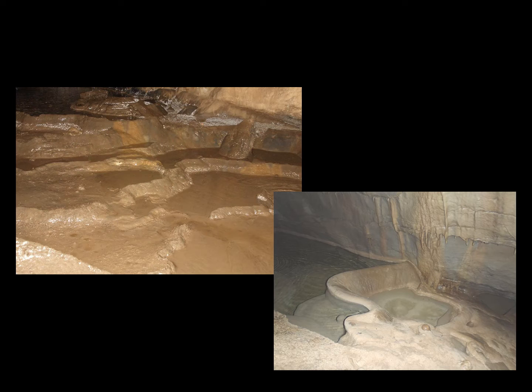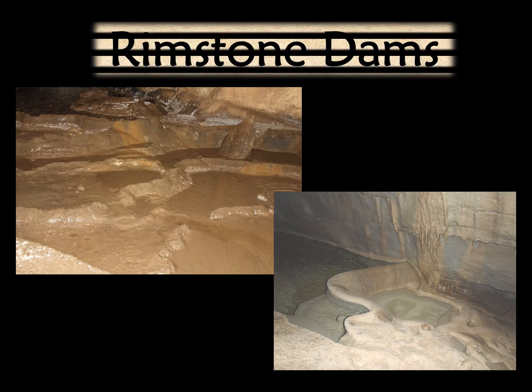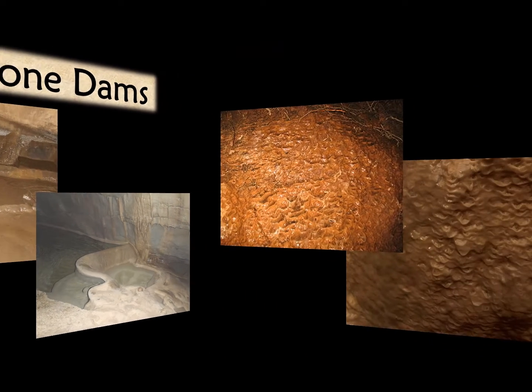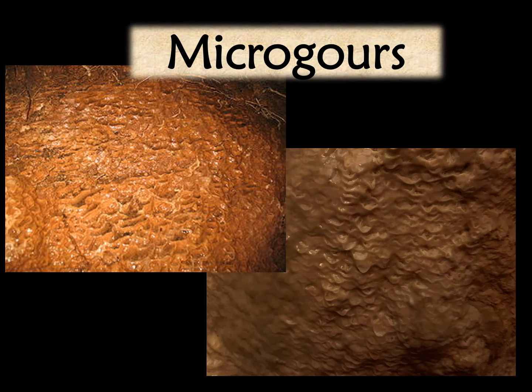These remind us of miniature dams. Rimstone dams are barriers of calcite which obstruct a cave stream or pool, forming when more rapidly moving water deposits calcite in the form of a lip of a dam. Microgowers are miniature rimstone dams forming on the surface of flowstones, caused by splashing water depositing calcite in the form of a dam, much like the larger rimstone dams.